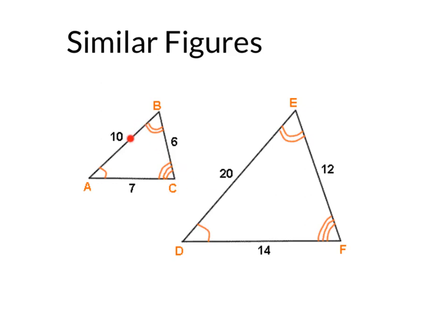Same thing with 10 and 20. 10 times 2 is 20, and side BC, 6, times 2 is the same as EF, 12. So we scale this whole triangle times 2, that's 7 times 2 is 14, 10 times 2 is 20, 6 times 2 is 12, and we will have similar figures.